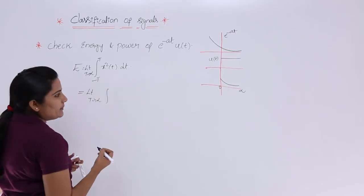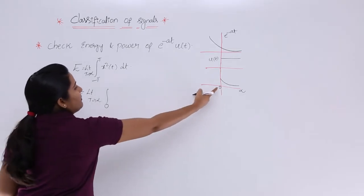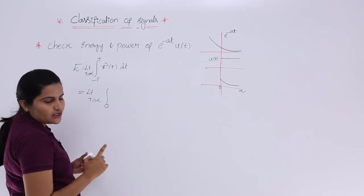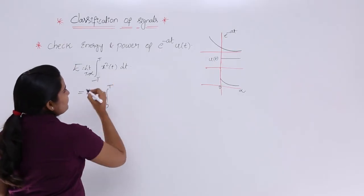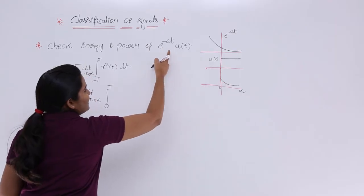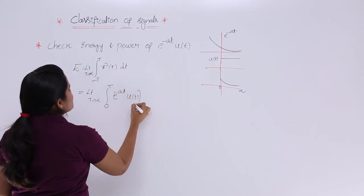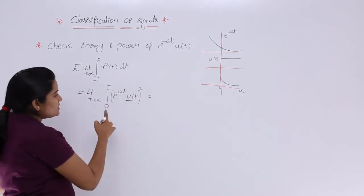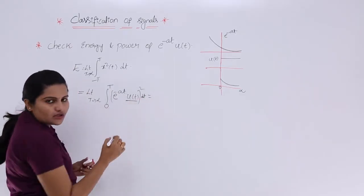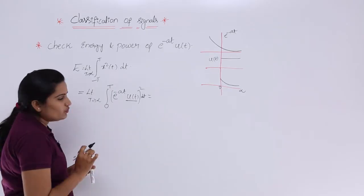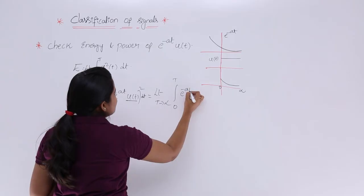Now, instead of -T to T, I am going to change my lower limit to 0, because my signal starts from 0. The upper limit stays as T with T tending to infinity. So we get the integral from 0 to T of x²(T) dt, where x(T) = e^(-aT)u(T). Since we are integrating from 0 to T, u(T) equals 1 and there is no need to keep the u(T) term.